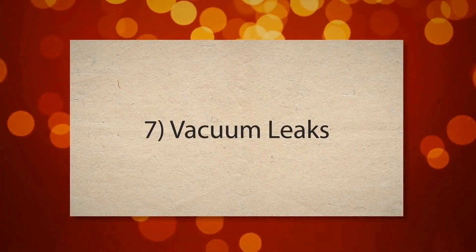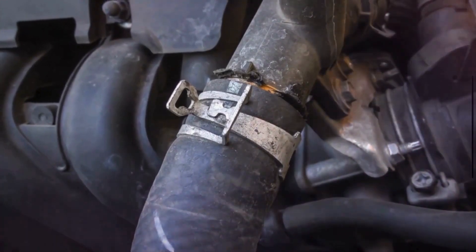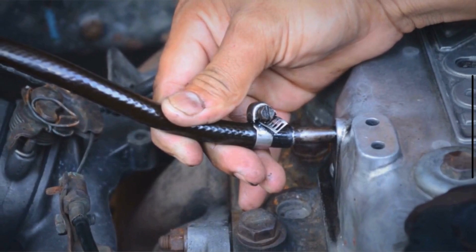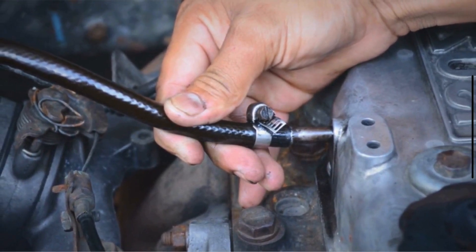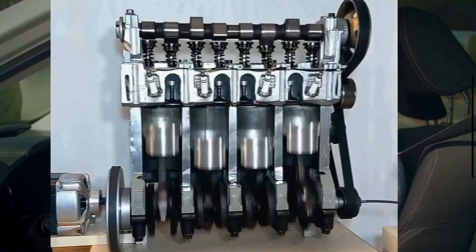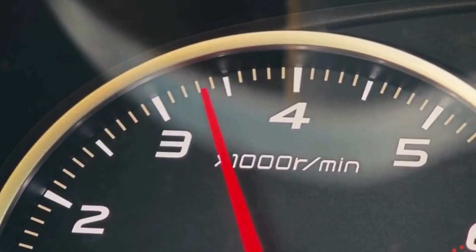7. Vacuum Leaks. Vacuum leaks can disrupt the air-fuel mixture by allowing unmetered air into the engine. When the AC is on, the engine's demand for power increases, and the imbalance caused by vacuum leaks can lead to rough running and shaking.